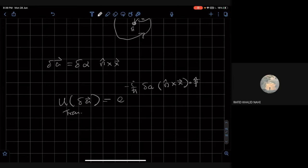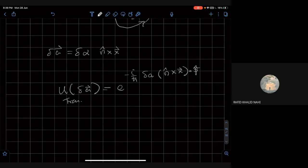And now we can use one of the nice identities from vector algebra to write this as e to the power minus i by h bar, delta A, n dot, this is a unit vector not an operator, x cross p.